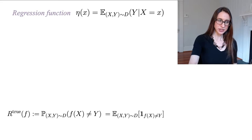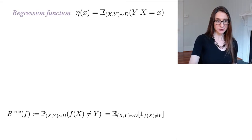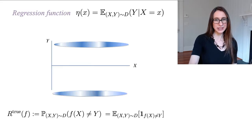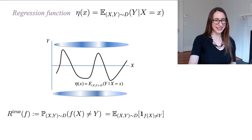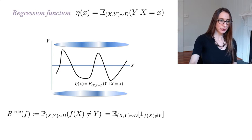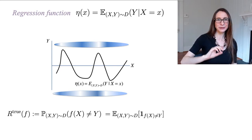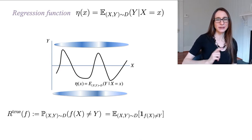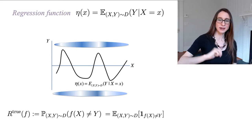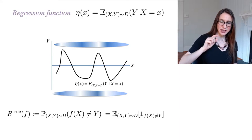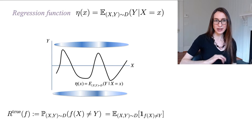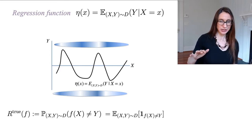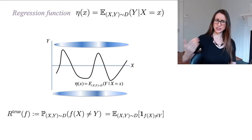I want to define the regression function eta. It is the expectation of Y given X. Since Y can be either positive or negative, eta can also be positive or negative. In order to construct eta, you have to know the whole distribution of Y for each X — you can think of eta as being constructed point-wise. Take any value of X and look at the distribution of Y's on that X; that distribution tells you what eta is at that particular point. So to construct eta, you need the whole distribution and you can't restrict to a limited function class.